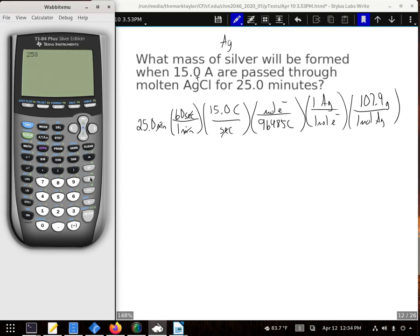25 times 60 times 15 divided by 96,485 times 107.9 gives us.